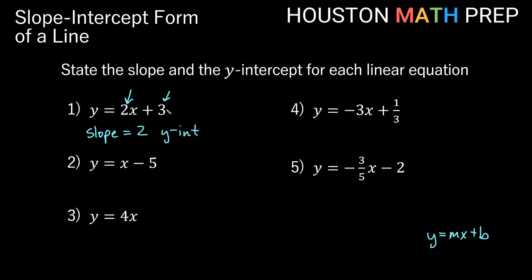Now remember, the y-intercept is a point, so we don't just want to say it equals 3. We want to say the point on the y-axis at 3, which is actually the point (0, 3). So that's our slope of 2 and our y-intercept.